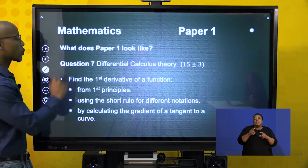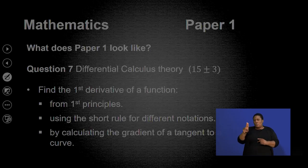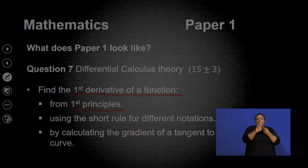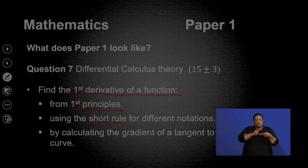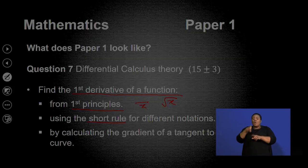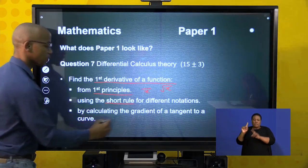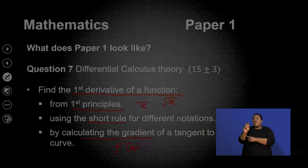Question 7 deals with differential calculus theory, between 15 plus or minus 3 marks. Here you need to find the first derivative of a function. The first method — which is a giveaway, grade 12s — is from first principles. The second is to use the short rules. When using the short rules, make sure your x is not a denominator and not inside a square root. Lastly, you calculate the gradient of a tangent, which is actually the first derivative of that particular function.